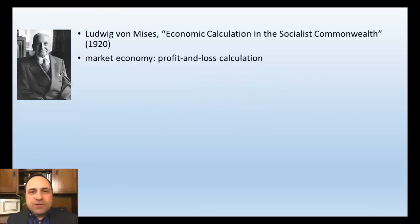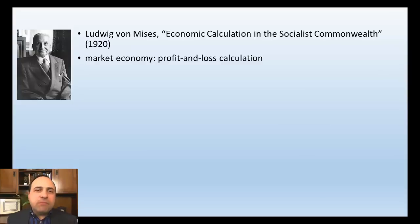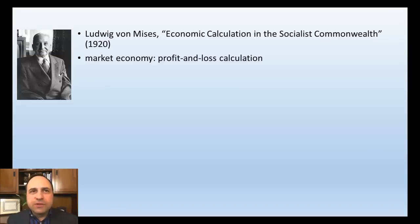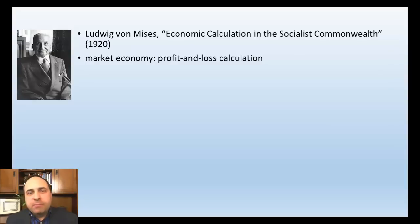The idea of the Socialist Calculation Problem comes from an economist named Ludwig von Mises, who wrote a famous article in 1920 called 'Economic Calculation in the Socialist Commonwealth.' What Mises was trying to show in that article is that a socialist government is faced with basically a problem that cannot be solved.